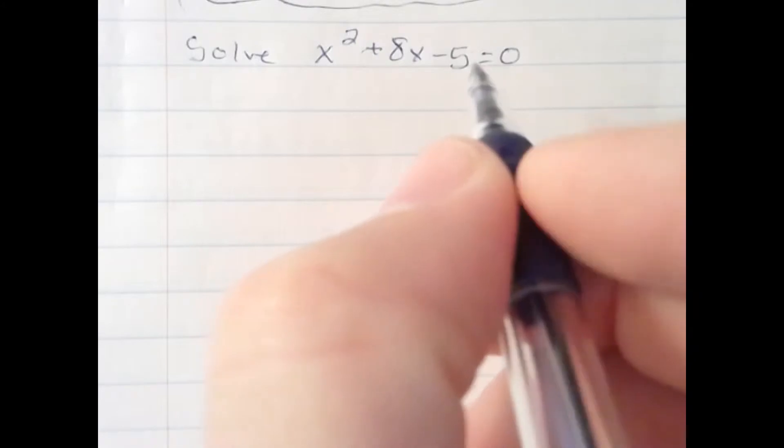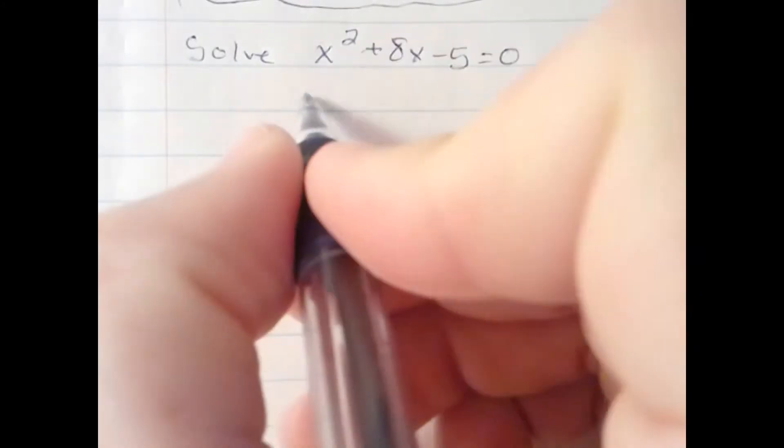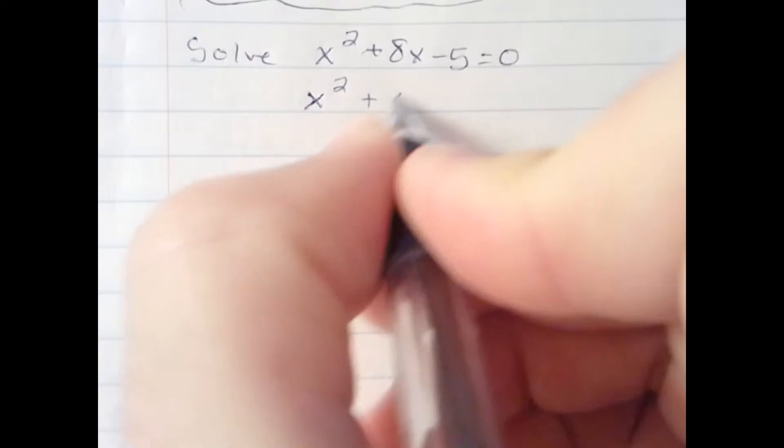First thing we'll do is add 5 to both sides. This is an optional step. You can handle this in a number of ways.